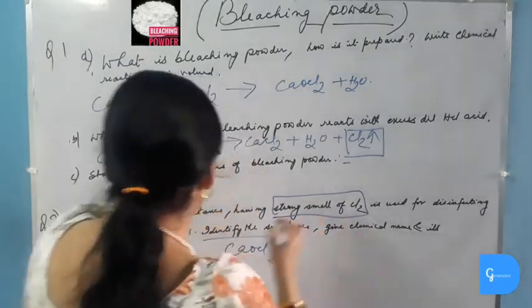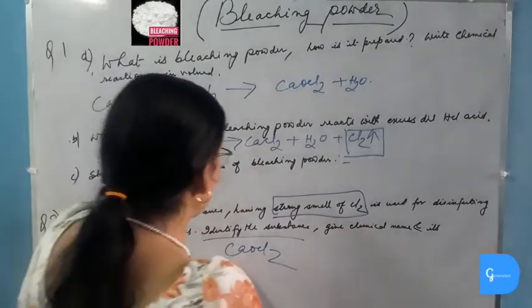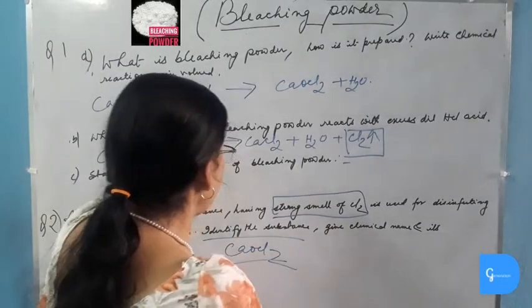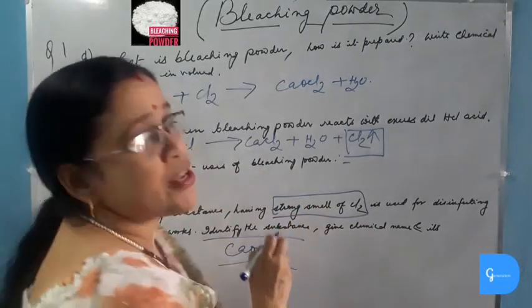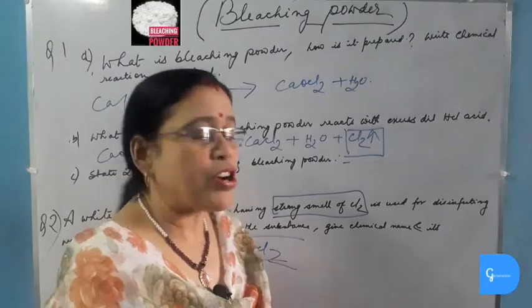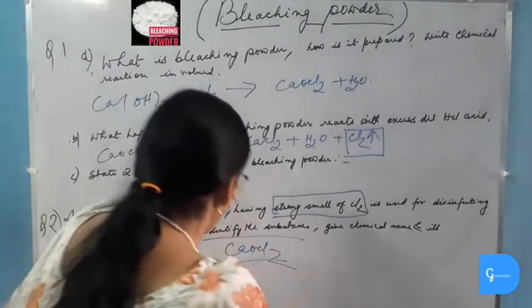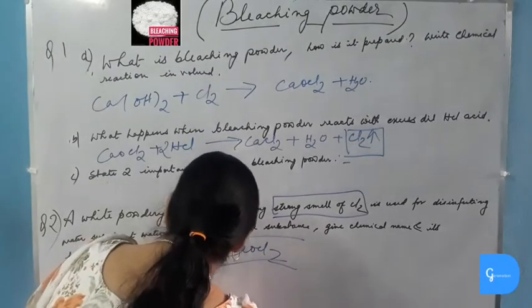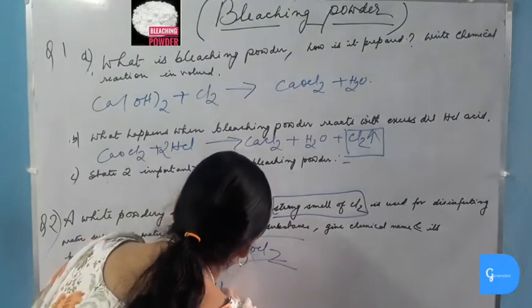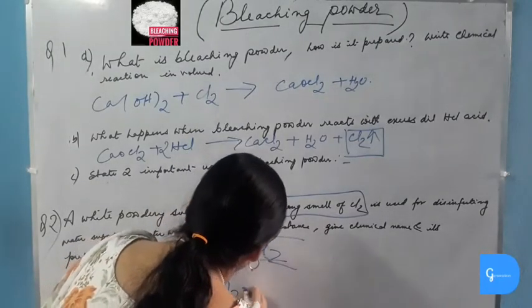The chemical name of bleaching powder is calcium oxychloride. Its preparation: bleaching powder is prepared when chlorine gas is passed through dry slaked lime.